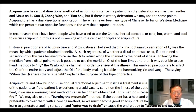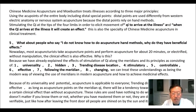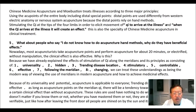Acupuncture and moxibustion's use of dual directional adjustment in illness treatment is used relative to the condition of the patient. If the patient is experiencing a cold vacuity condition, the illness has a potential to elicit heat. If we use warming hand methods to help obtain heat, this method is called entering to tonify with fire; we may also use the burning the mountain method. If the patient has heat and excess condition, it is preferable to treat them with a cooling method, becoming good at acupuncture hand methods in order to generate a cooling sensation and enter to drain, or cause the entire body to ascend to the heavenly coolness. Chinese medicine, acupuncture, and moxibustion treats illness according to three major principles, using acupoints of the entire body including distal special points. Distal points are used differently from Western electrical anatomy or nervous system acupuncture because the distal points rely on hand methods, stimulating the qi at the tips of the four limbs in order to elicit movement of qi to arrive at the illness. When the qi arrives, it will create an effect.